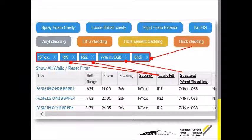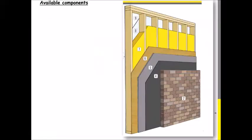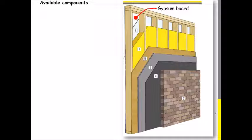Otherwise you can go through the different menus and select things. For example, I've selected a cavity fill of R19 and R22, structural sheathing, and brick. The available components you can select are worth noting — and keep in mind that, as opposed to Sal's tool, this one is only dealing with walls.